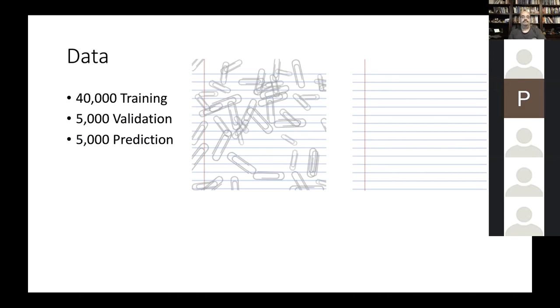After doing the subtraction of the matrix as a result, the images will become the left hand side, the black background and also the gray paper clips. However, since there are still some colors lying in these images, we believe this information is still not very useful for us to do the prediction and training. So as a result, we first convert these images to the gray scale images and make a copy for three and reach it back to 256 by 256 by 3. That's what we did during the pre-processing process.